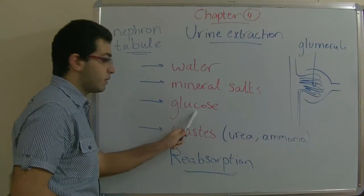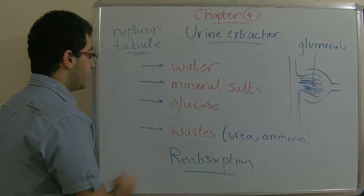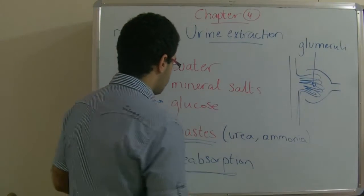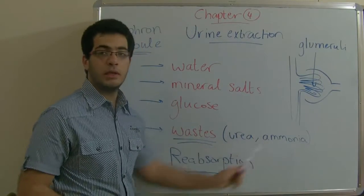So, water, mineral salts and glucose return once more to the blood and the wastes like urea, ammonia, uric acid,